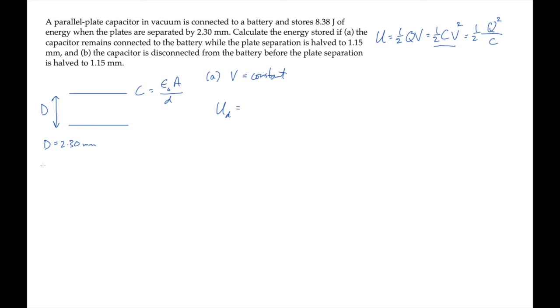For the new separation, call it little d, we have one half times the new capacitance times the voltage squared. And for the original, we have one half times the original capacitance times the voltage squared.